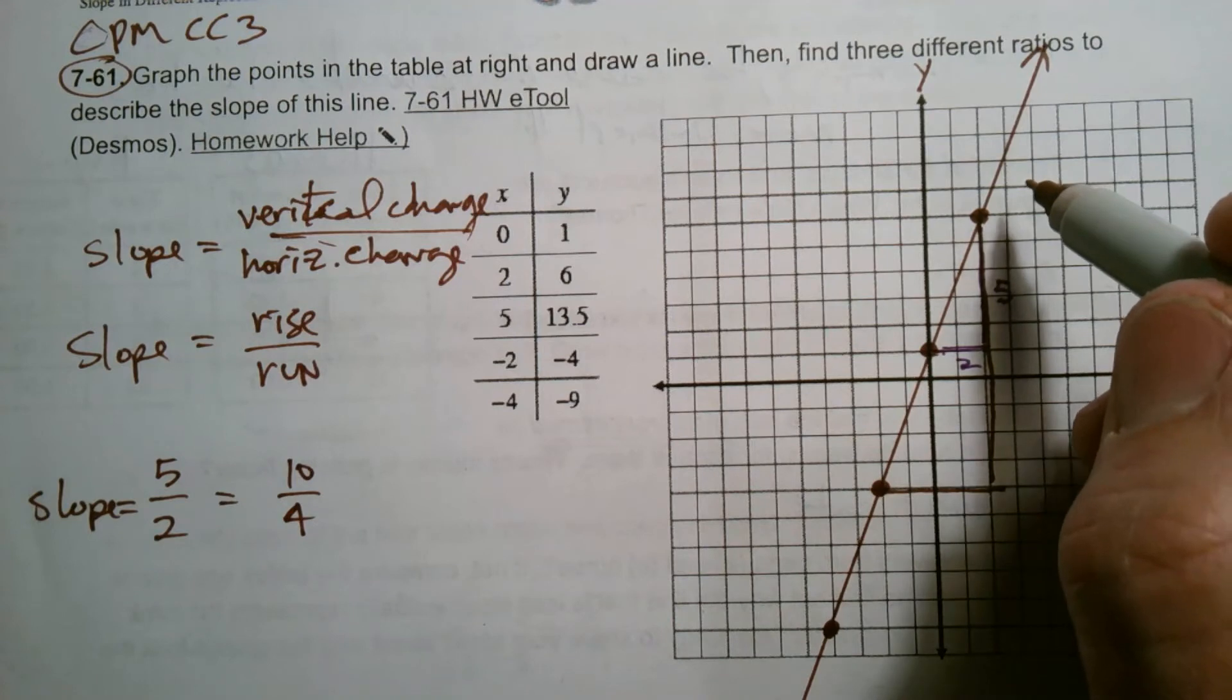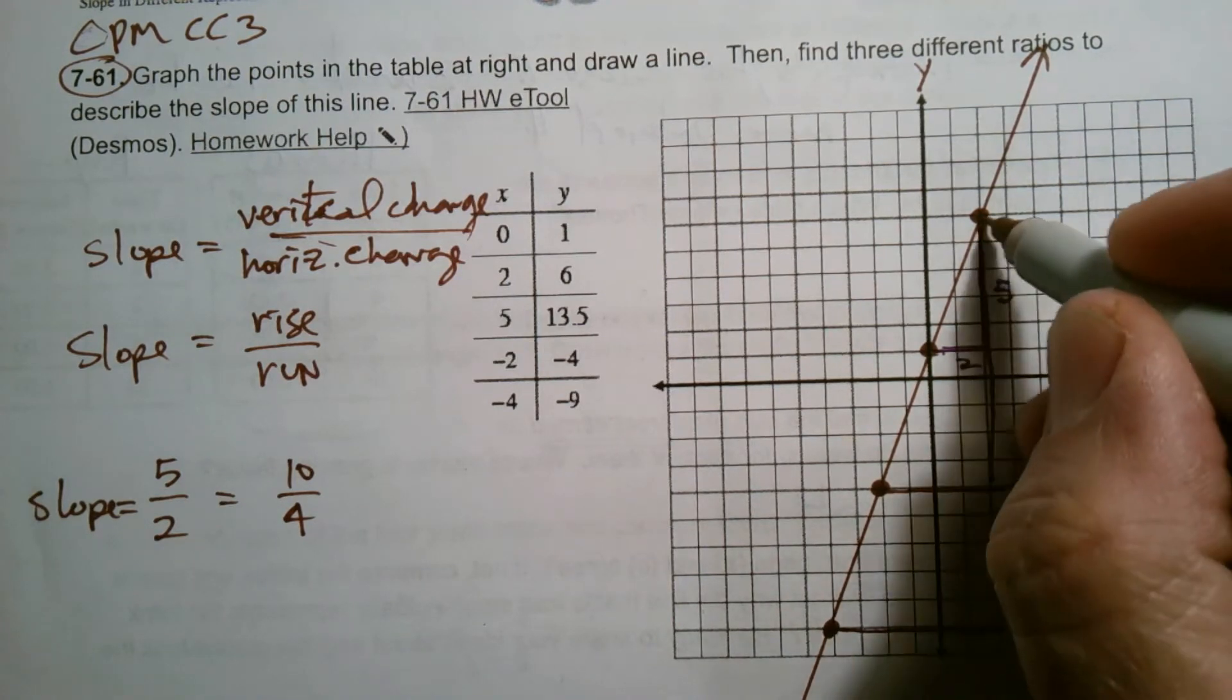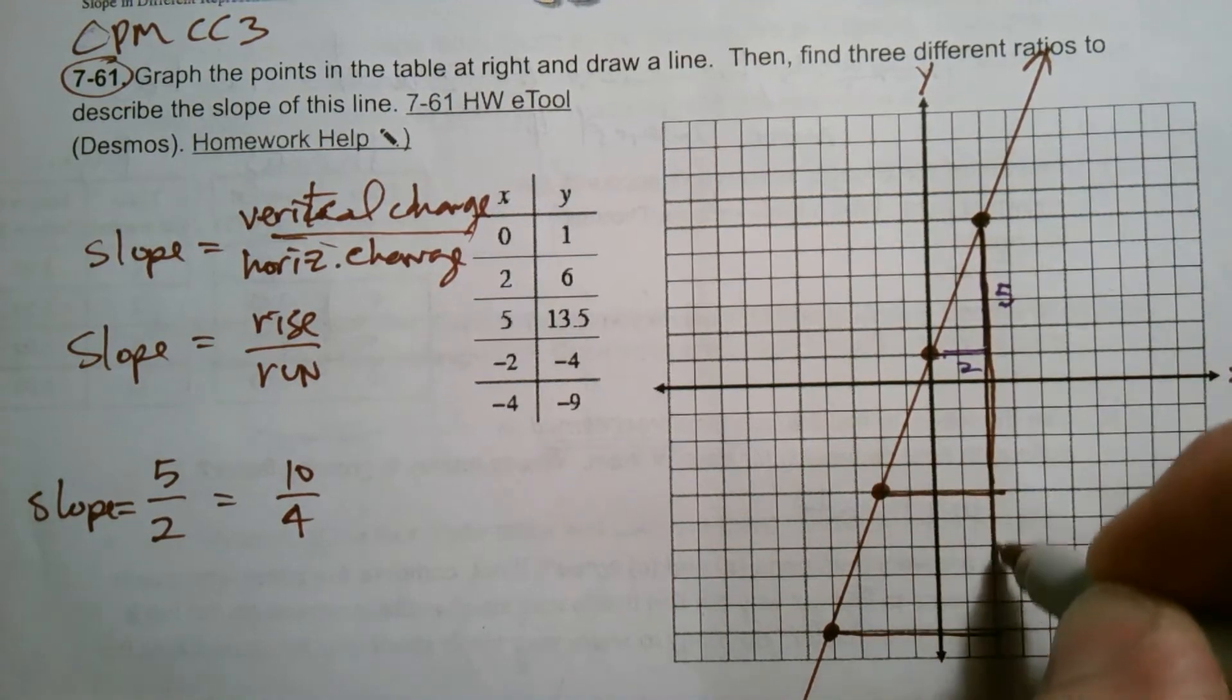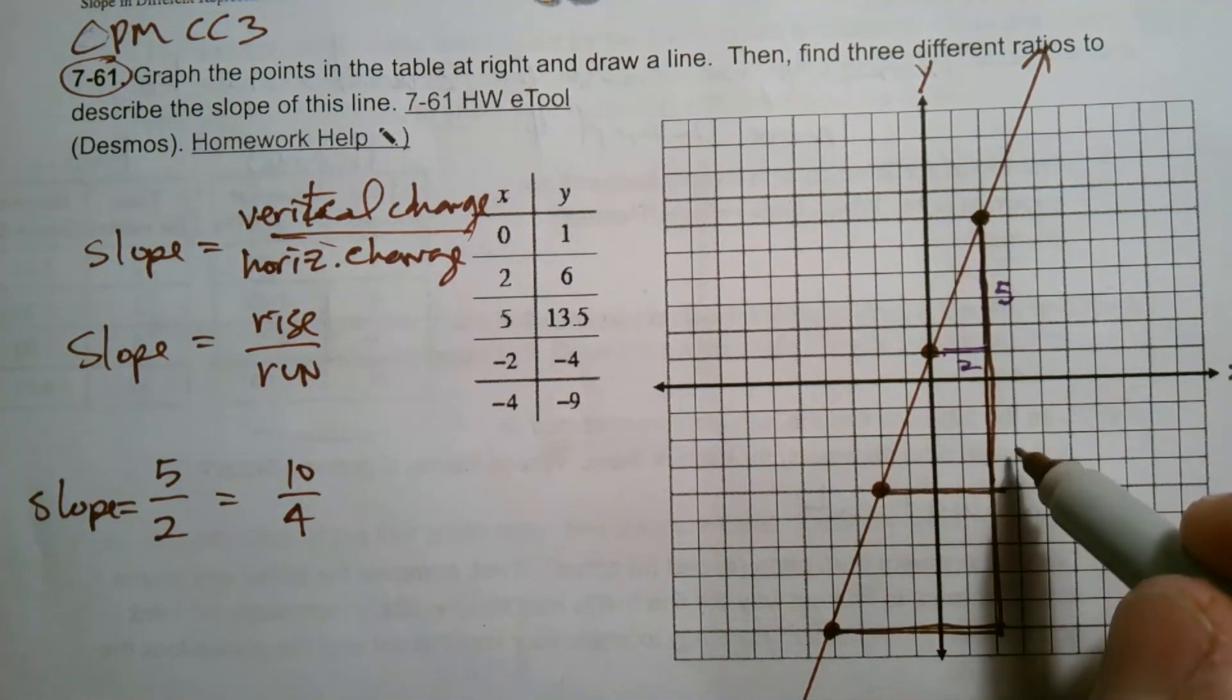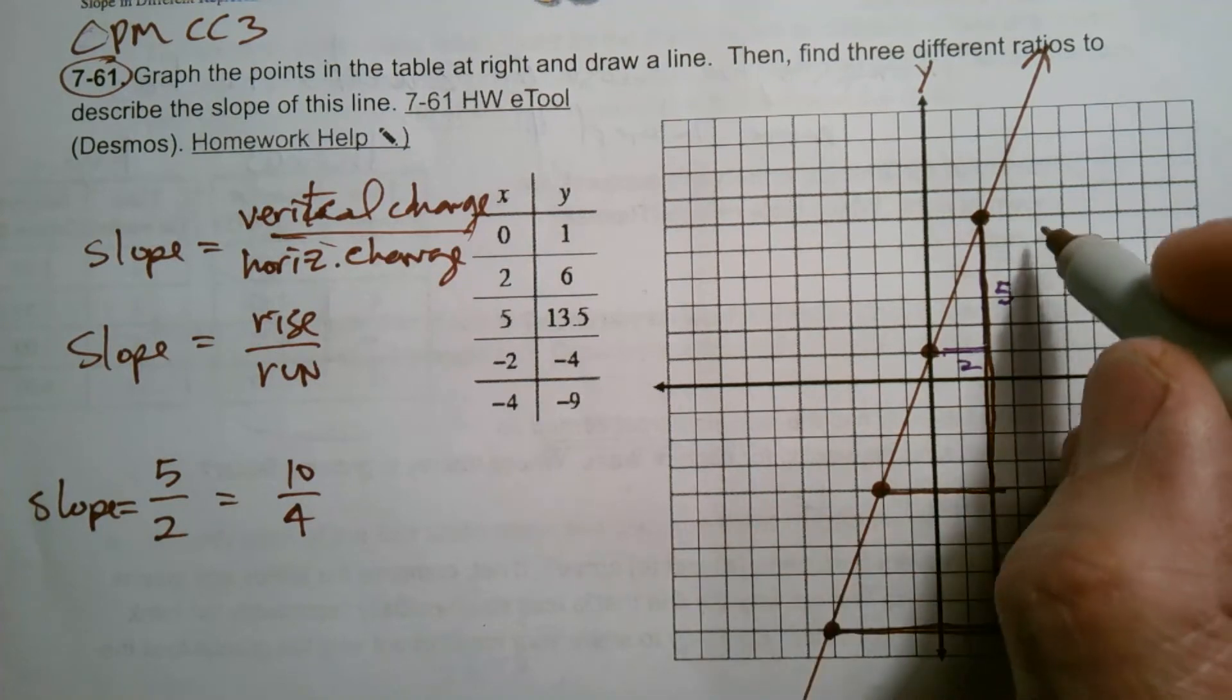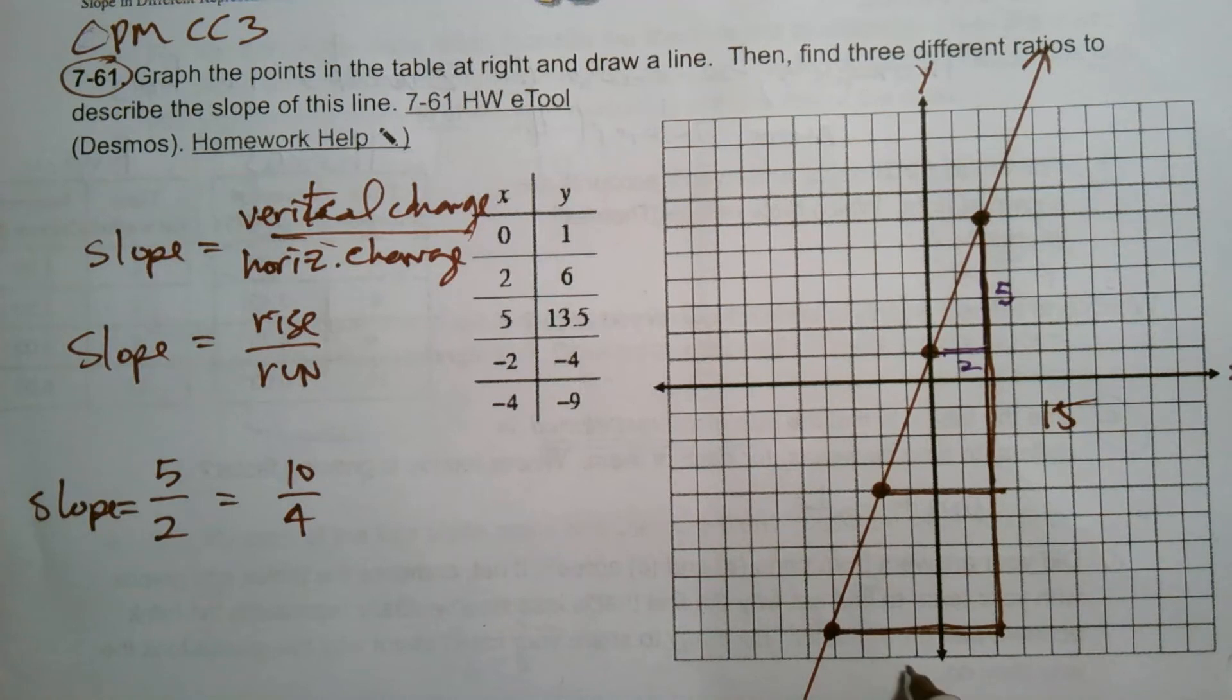And if I even want to get a bigger triangle, a slope triangle, I can have this one here, which would go from this point all the way to this point. Each of those are five, so that would be 15. This is a total of 15, and this is a total of one, two, three, four, five, six.